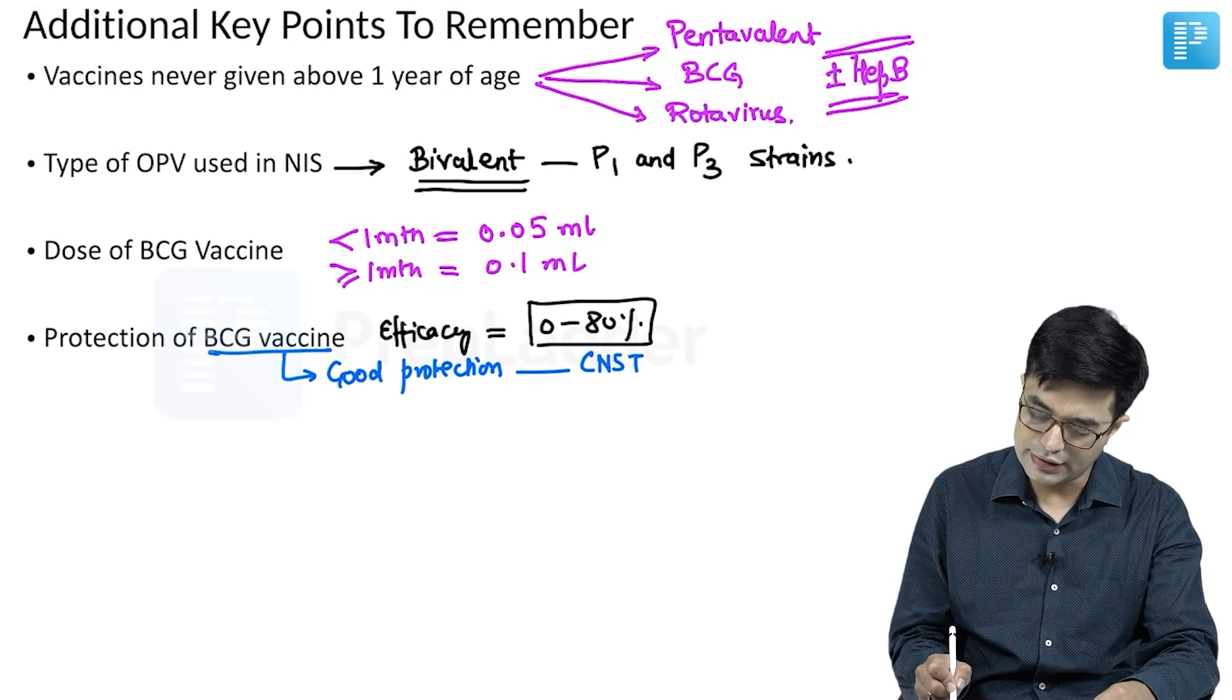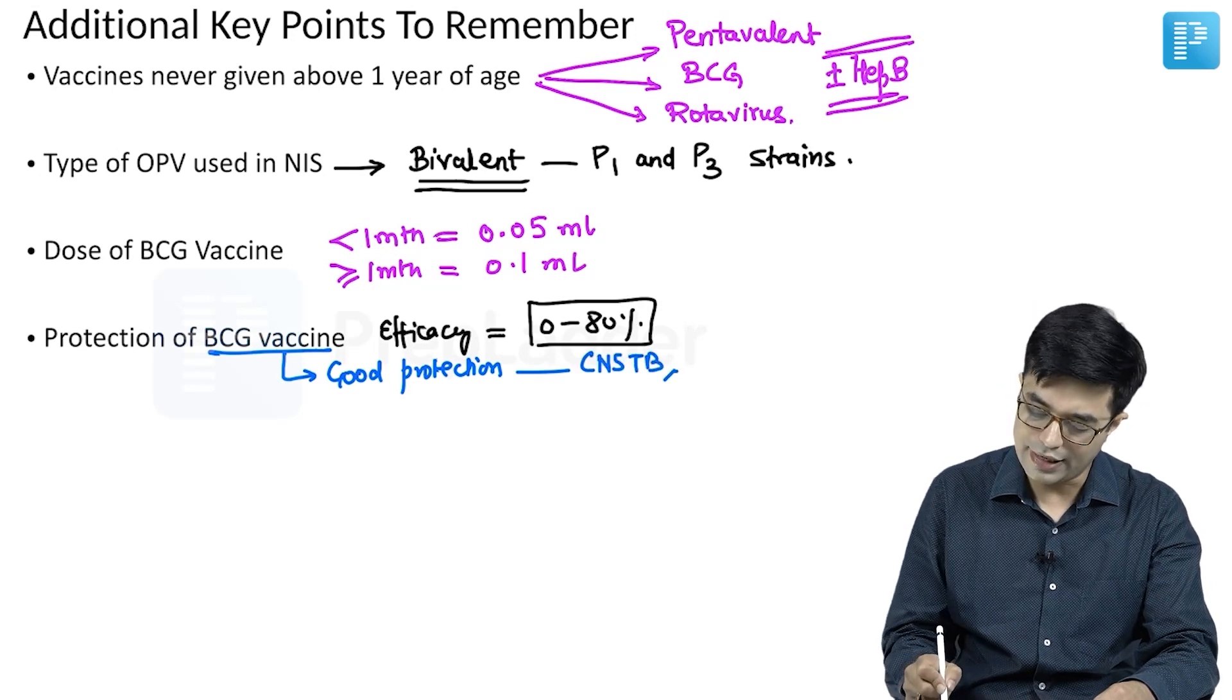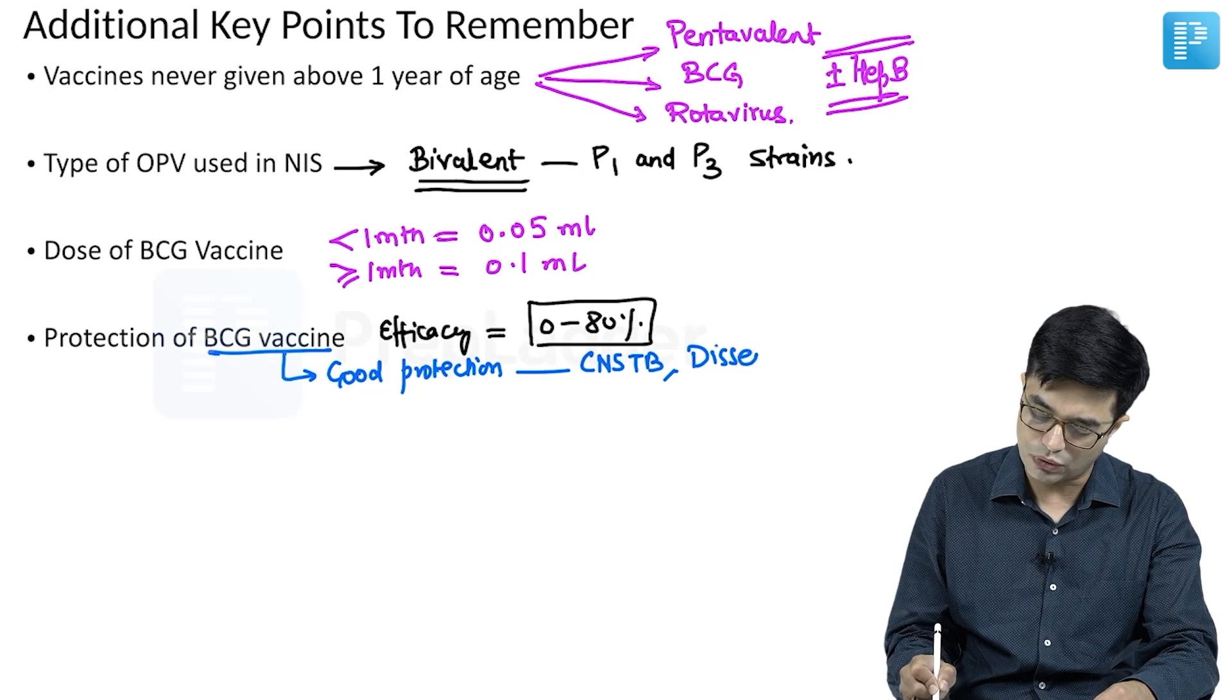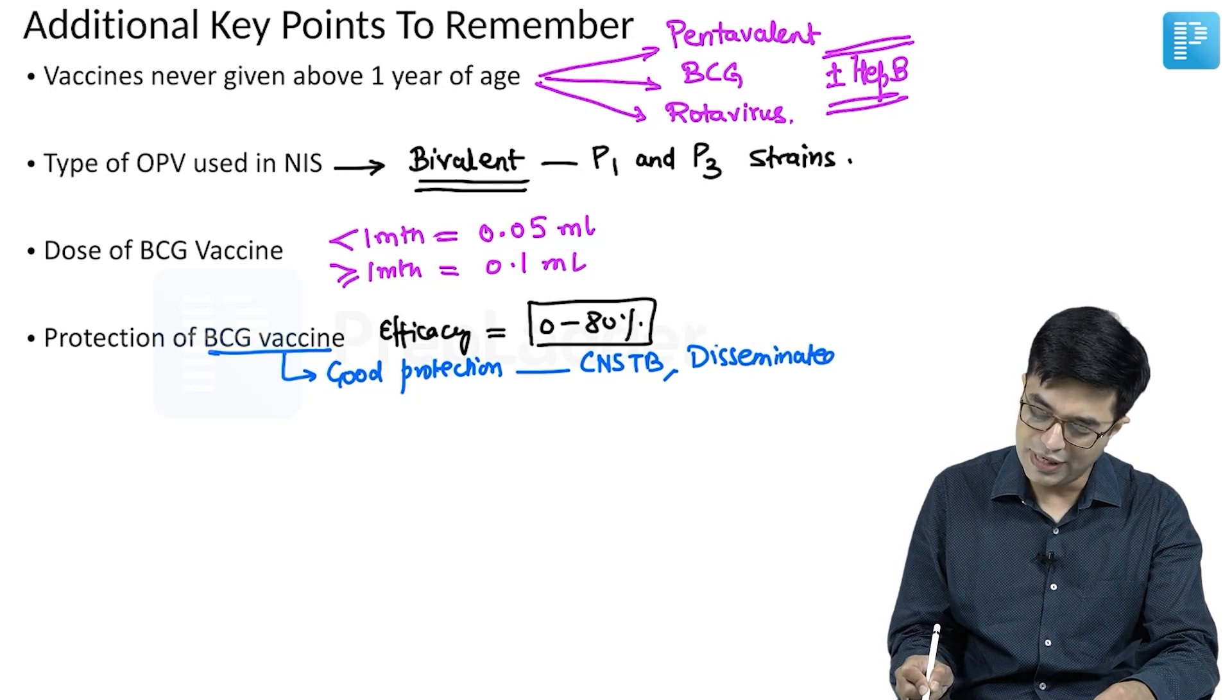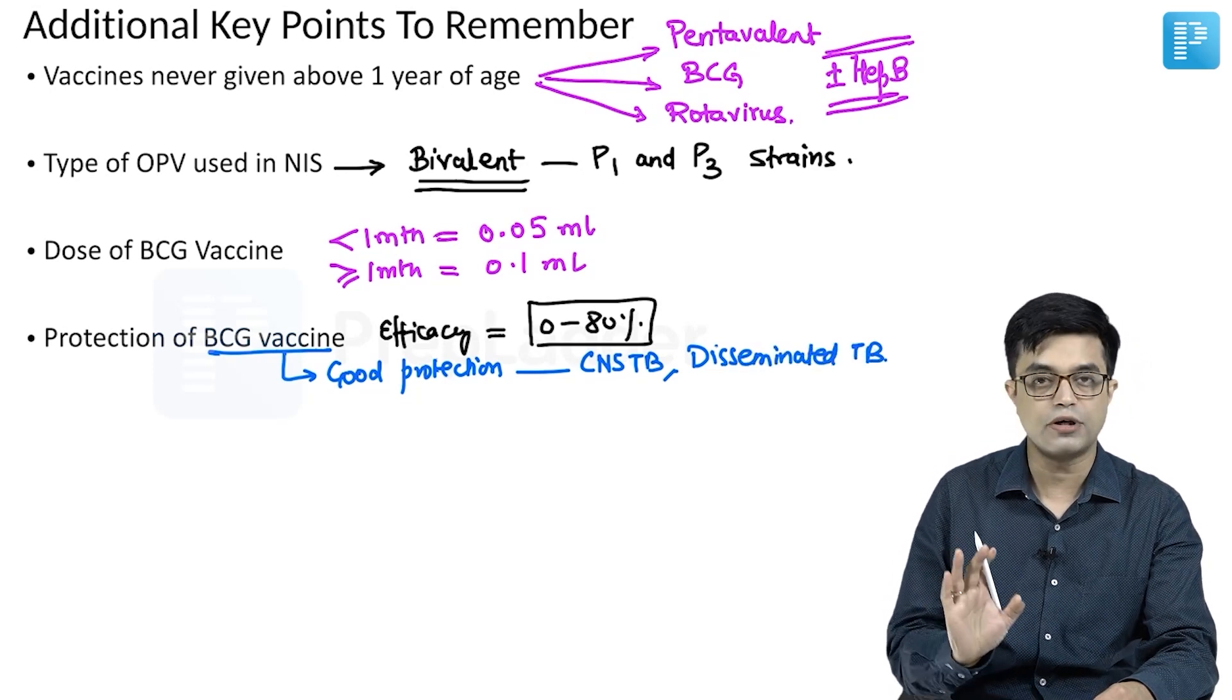Against CNS tuberculosis, it provides good protection, and against disseminated tuberculosis, including miliary tuberculosis, it provides good protection.